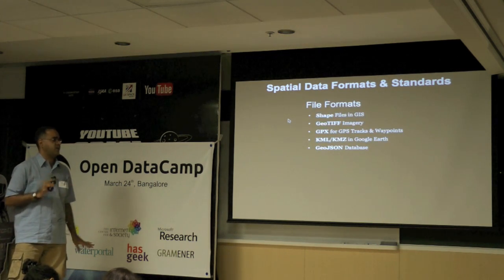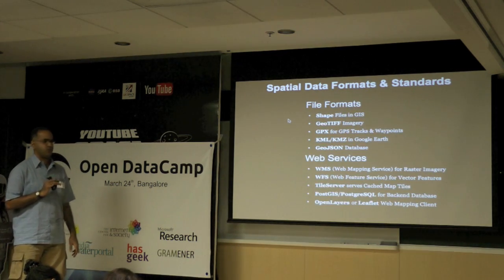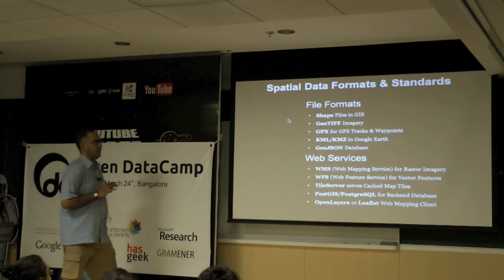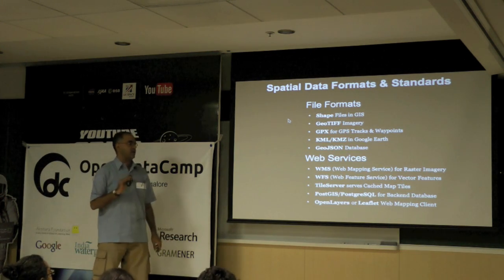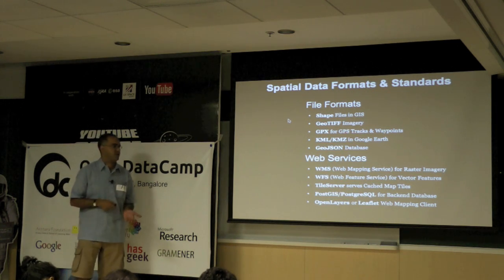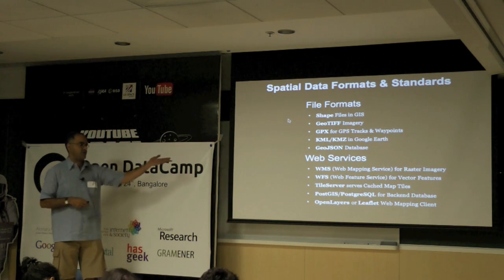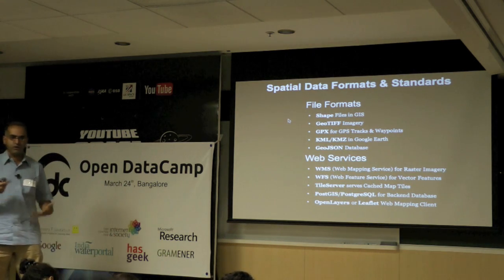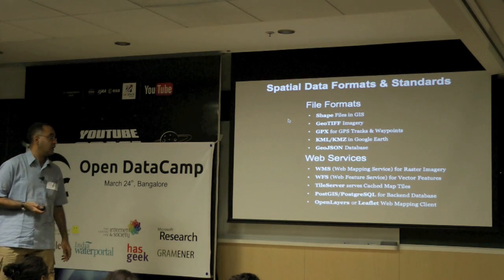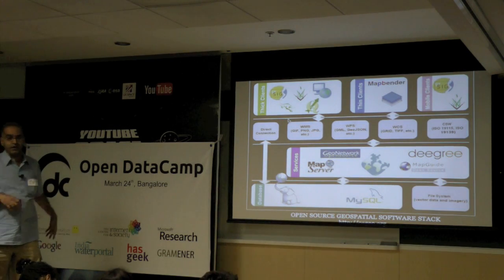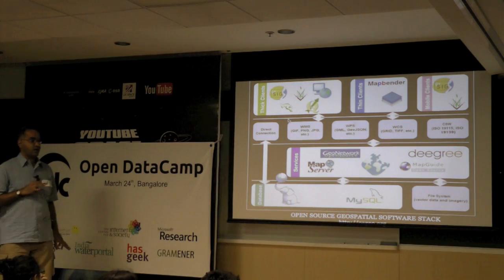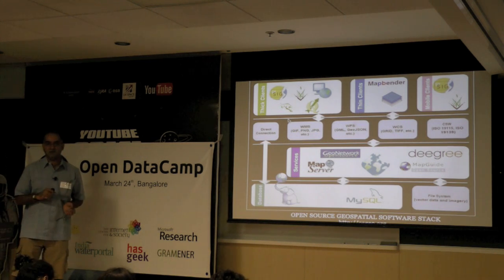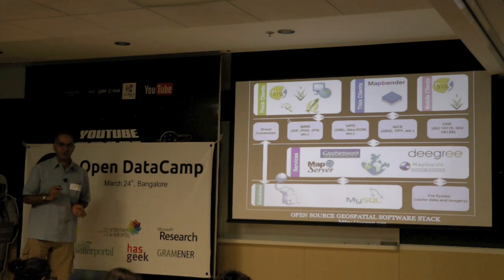These are the file formats and standards that those who have done work with geographic data would be familiar with: shapefiles, GeoTIFF, and GPX — which is what comes off a GPS device. These are the open formats and web services that power the delivery of map data, particularly over the web but also through database servers. This technical diagram showing how it all fits together is now quite dated — from about four years ago — and the situation has dramatically simplified in the world of open source geospatial software. We can talk more about that in a breakout session this afternoon.